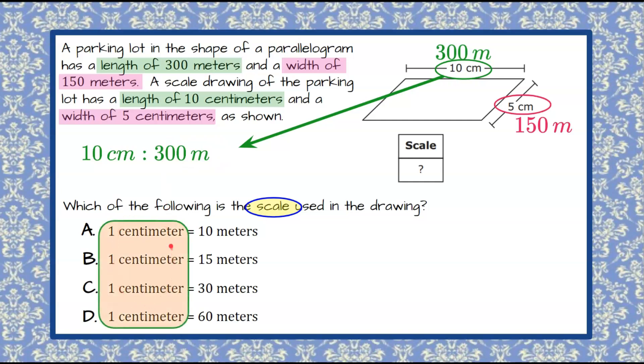When we look at our answer choices, all of the centimeter values are 1, so they want this written in simplest form. So we're going to divide each side of our ratio. Whatever you do to one side, you must do to the other, to find out what the value of 1 centimeter is in this scale. So 10 divided by 10 is 1, or 1 centimeter.